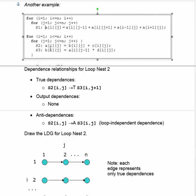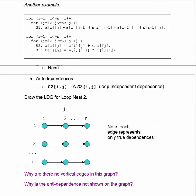In the second loop nest, the value of A sub i,j computed in S2 is used in the next j iteration of S3 — that's a true dependence. The anti-dependence is that B sub i,j is used in S2 and written in S3, so this read has to occur before that write. The loop dependence graph is straightforward because there are dependences only in the j-th iteration and no dependences between the various rows, which means all of the rows could be executed in parallel.